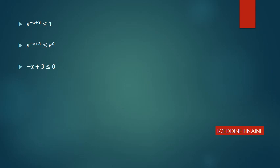Example: e^(-x+3) ≤ 1. Instead of 1 we write e^0, so -x + 3 ≤ 0, which gives x ≥ 3. The solution is from 3 to plus infinity.